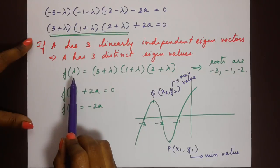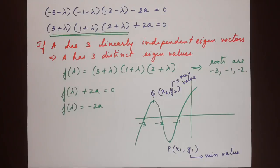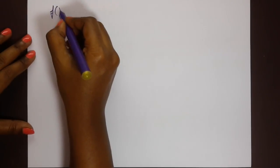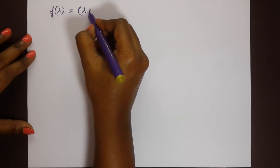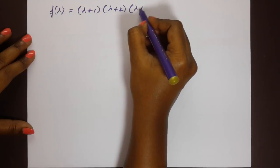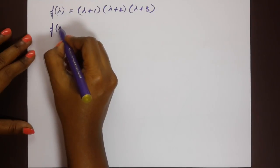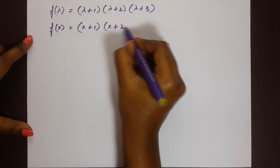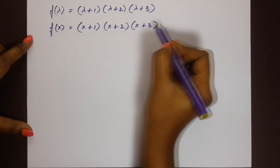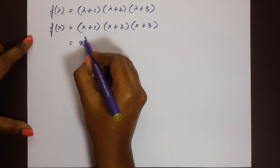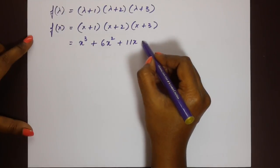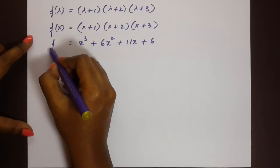I'll write it in terms of x for easier solving. f of x equals x plus one, times x plus two, times x plus three. Expanding, we obtain x cubed plus 6x squared plus 11x plus 6.